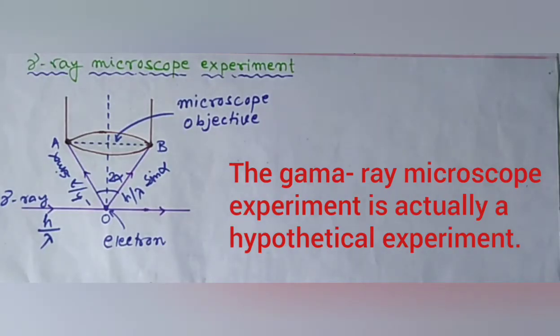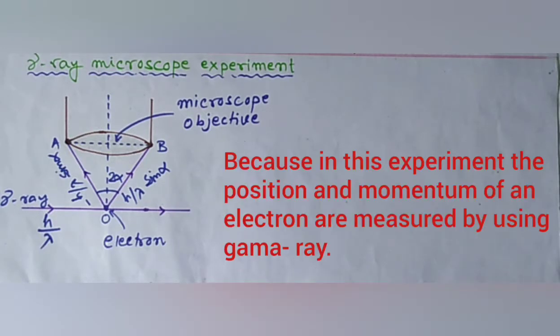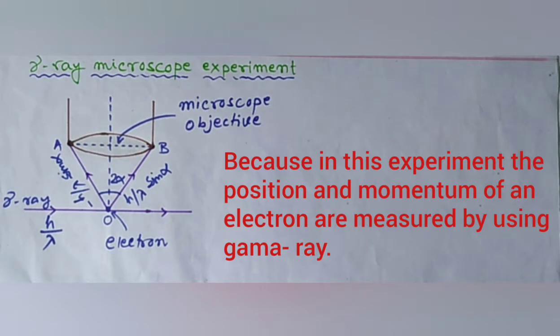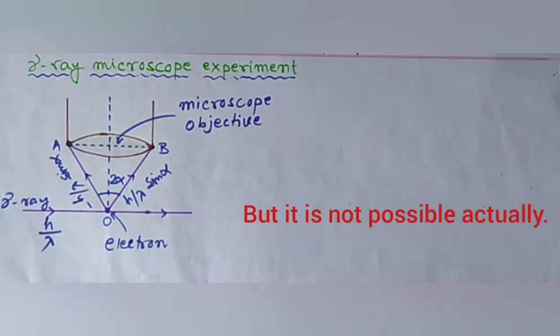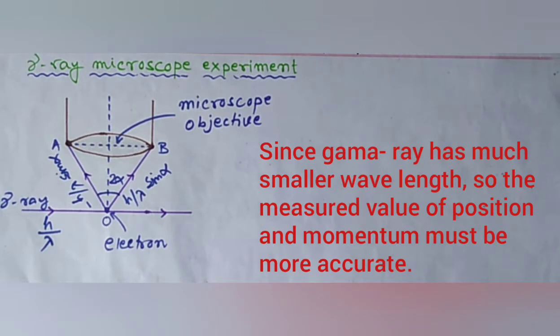The gamma ray microscope experiment is actually a hypothetical experiment. Because in this experiment, the position and momentum of an electron are measured by using gamma ray, but it is not possible actually. Since gamma ray has much smaller wavelength, the measured value of position and momentum must be more accurate.